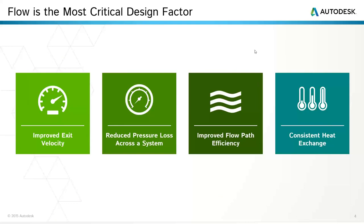Looking at flow, some of the results we use to guide decisions: typically you're looking at exit velocity — determining what the average velocity is, but also at specific sample points so you can compare with test data and determine how accurate your solution is. Pressure loss across the system is always a really good indicator of how something's performing. Flow path efficiency — how efficient is your flow path, how much time is it spending in the system? You can run a transient study for that. Also, is your flow maintaining the orientation you want? Are you getting any recirculation? And then consistent heat exchange — are you getting the heat transfer you need, consistently and reliably?